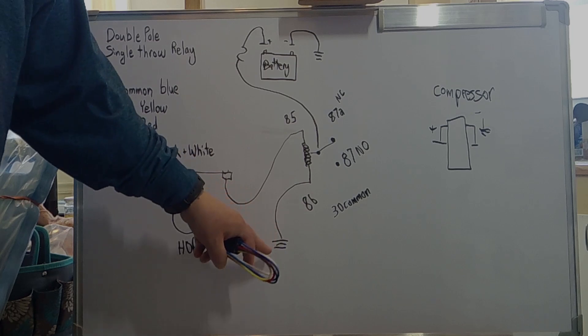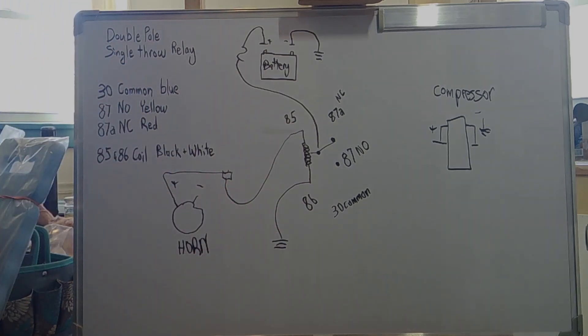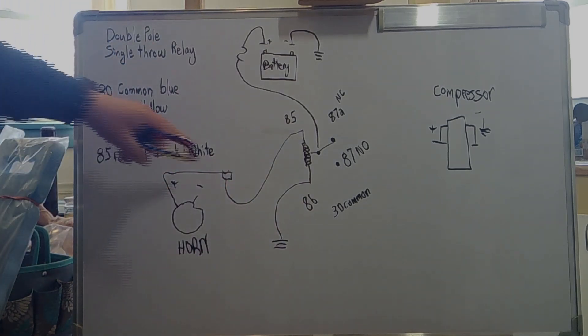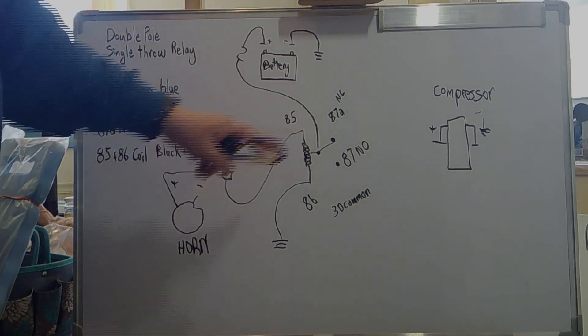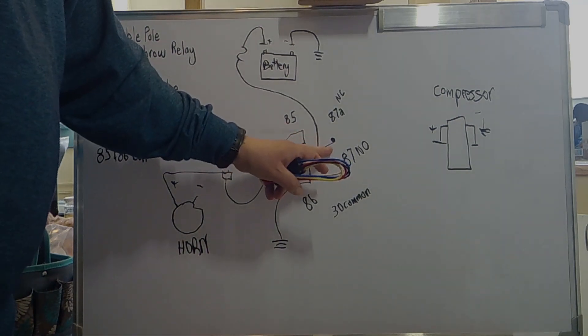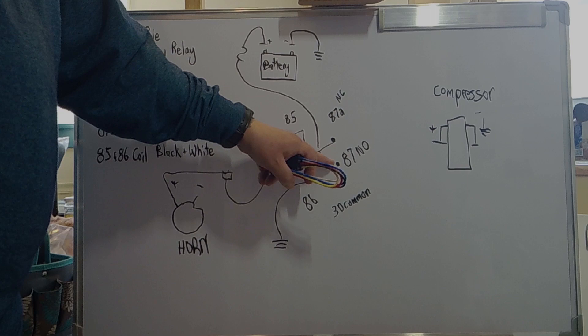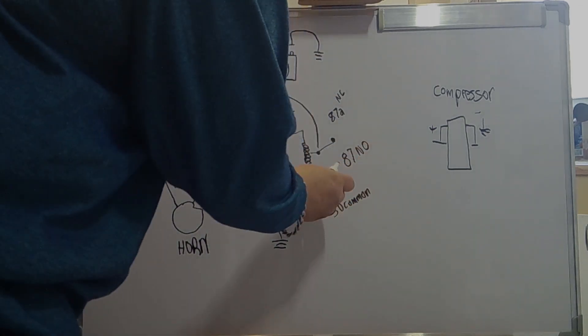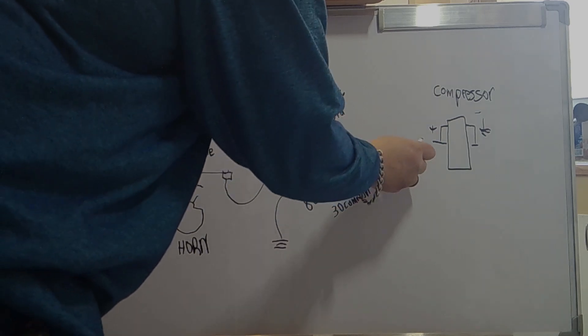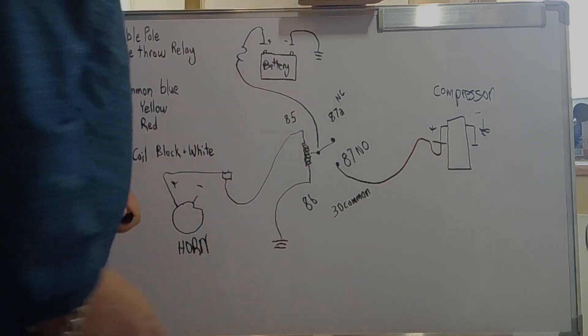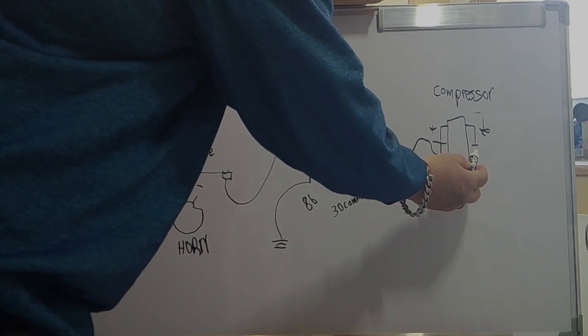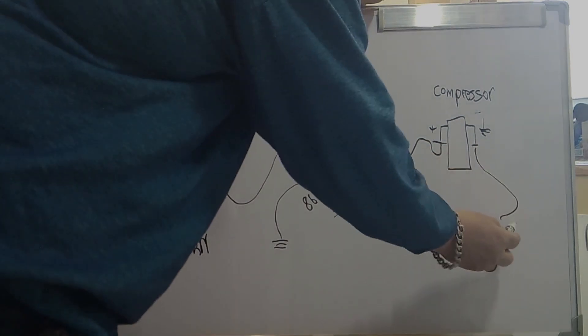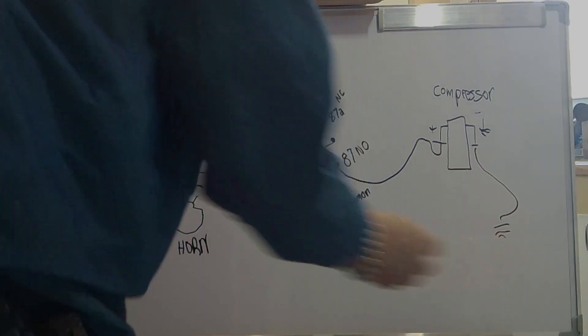Now when I blow the horn on the car, it will activate this coil which will flip this switch here over to pin 87, closing the circuit. From pin 87, I ran a wire running over to the positive side of my compressor. On the negative side of my compressor, I ran a wire over to body ground. So that would activate the air compressor, turning on the air horn.